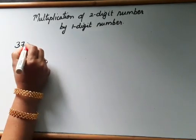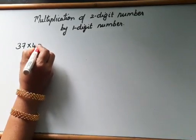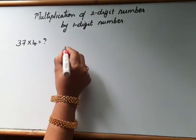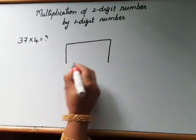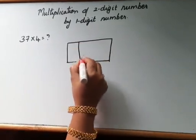Let's take an example of two-digit number by one-digit number. 37 multiplied by 4. Let's draw a box and write the multiplication sign in the corner.